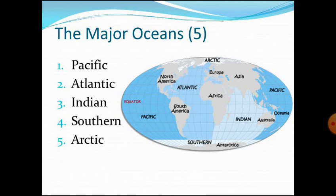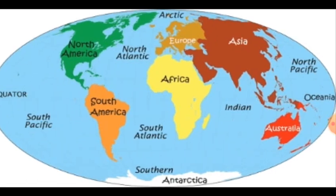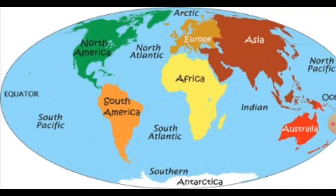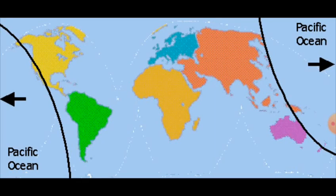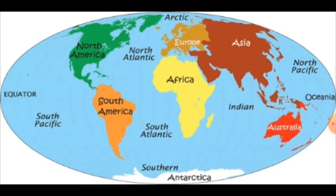The Pacific Ocean is the largest ocean, spread over one-third of the Earth. Mariana Trench, the deepest part of the Earth, lies in the Pacific Ocean. The Pacific Ocean is almost circular in shape, and Asia, Australia, North America, and South America surround it.